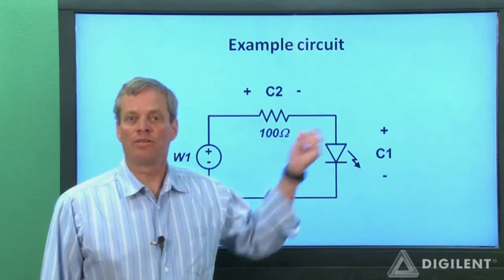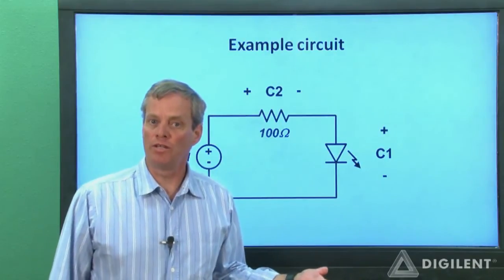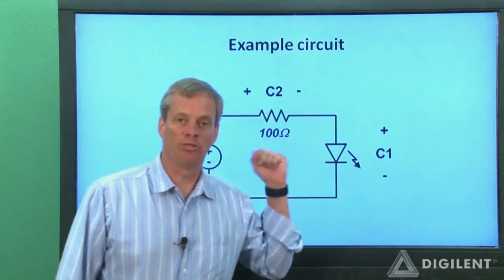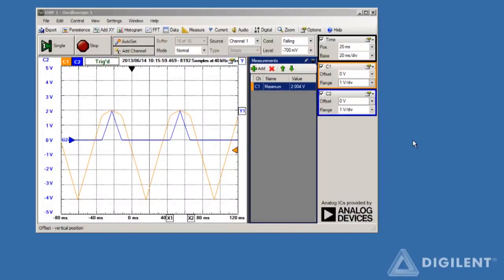There's a resistor to limit the current, and we're using both channels 1 and 2 of the oscilloscope to measure the resistor and LED voltages. My oscilloscope is set up just as it was at the end of the third scope tutorial video. The waveform generator is also producing the same input voltage that we used in that project.